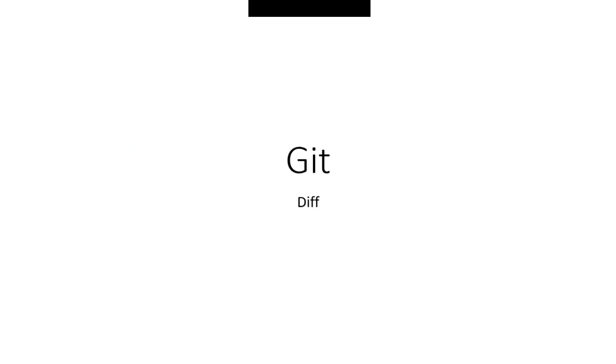Now we will look at Git Status. Git Status shows the present state of your project — what stage or status a file is in: untracking or tracking, modified state, unmodified state, or staged state. We will discuss the Git Workflow or Git Status Life Cycle, which shows the stages of Git.